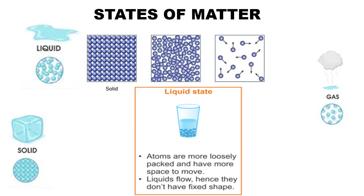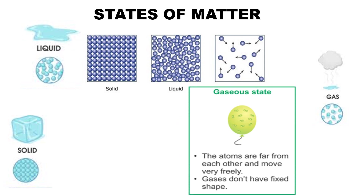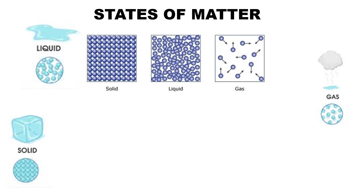So liquids do not have a fixed shape but they have a fixed volume. Now talking about gases: in gases the atoms are far away from each other and are free to move in all directions. Gases do not have a fixed shape and they do not have a fixed volume either. If you take one liter of any gas and put it in a container of five liters, it will occupy the whole space and the volume becomes five liters. So it does not have a fixed volume.